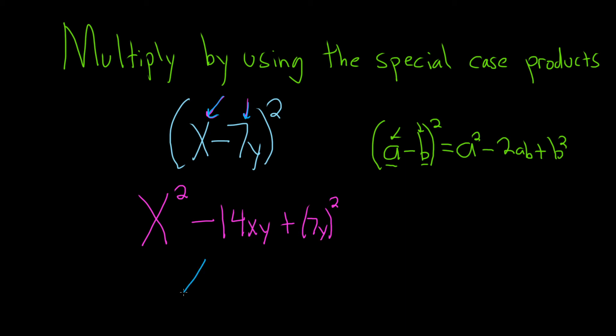Okay, last thing to do is rewrite this as x squared minus 14xy, plus, if you square the 7, you'll get 49, and square the y, you'll get y squared. And that would be the final answer.